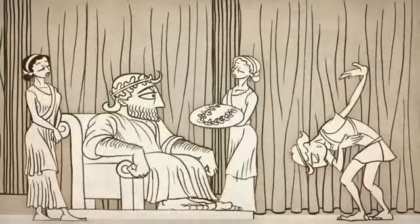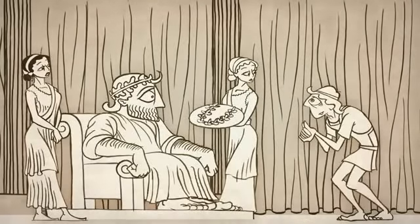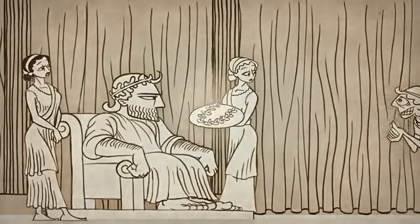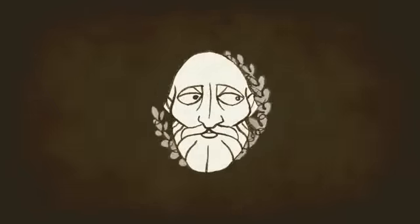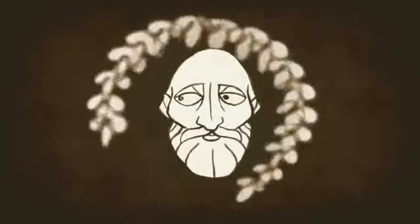However, when the crown was ready, the king suspected that the goldsmith cheated and slipped some silver into the crown, keeping some of the gold for himself. The king asked Archimedes to solve the problem, but there was a catch. He couldn't do any damage to the crown.